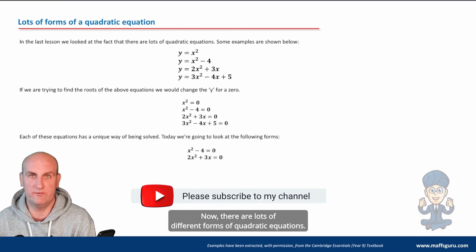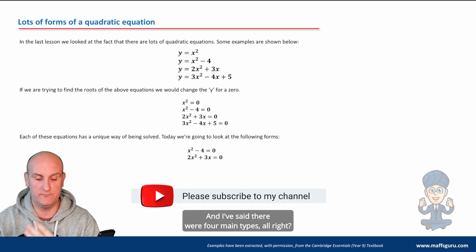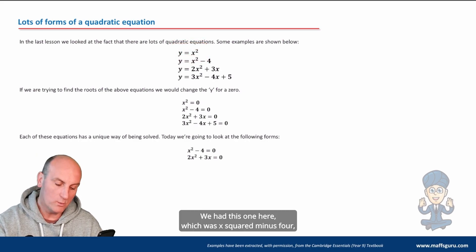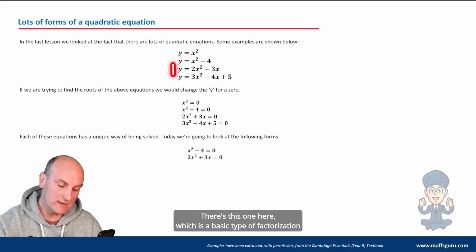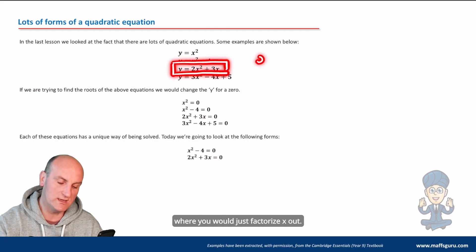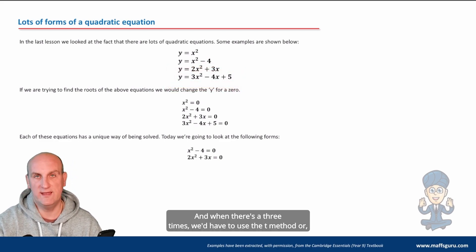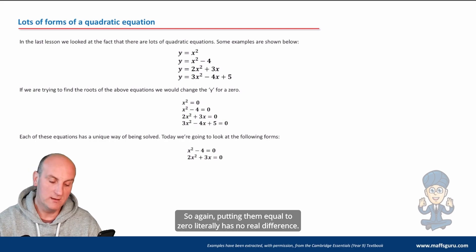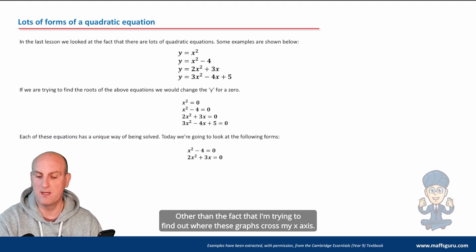Now, there are lots of different forms of quadratic equations. And when we were factorizing these previously, you had to learn all of them. And I've said there were four main types. So what are the four main types? There was this one, which was nice and basic, y equals x squared. We had this one here, which was x squared minus four, which if you remember, it was DOPS. There's this one here, which is a basic type of factorization where you would just factorize x out, makes life a lot easier. And then there's this one here with the three terms. And when there's three terms, we'd have to use the t method or the cross method or whatever it is you do to be able to do it. So again, putting them equal to zero literally has no real difference other than the fact that I'm trying to find out where these graphs cross my x-axis.